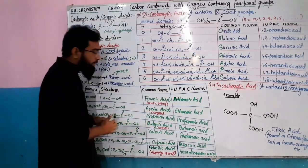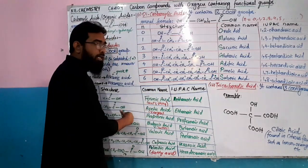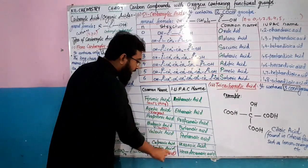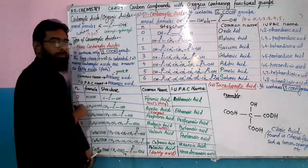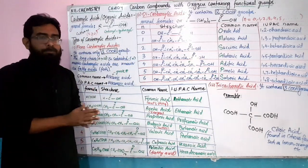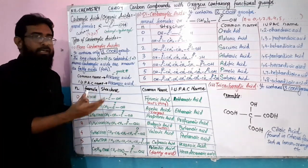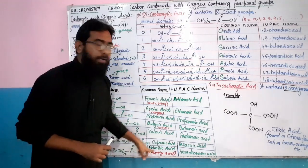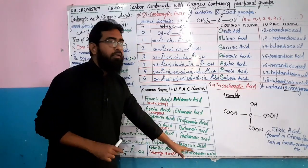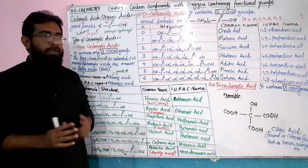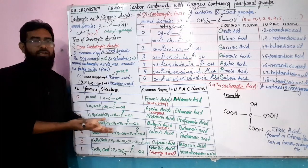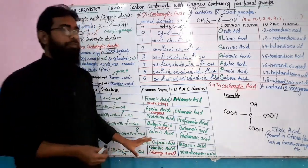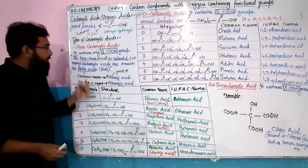For IUPAC naming using the alkan-oic acid system: 1 carbon = methanoic acid, 2 = ethanoic acid, 3 = propanoic acid, 4 = butanoic acid, 5 = pentanoic acid, 6 = hexanoic acid. For the 16-carbon compound, using Greek prefixes: 10 = decanoic, and hexadecane gives 16 carbons, so the IUPAC name is hexadecanoic acid. The common name is palmitic acid.